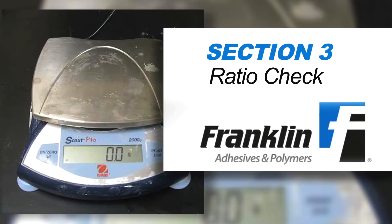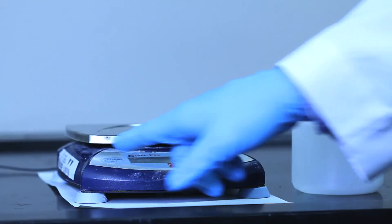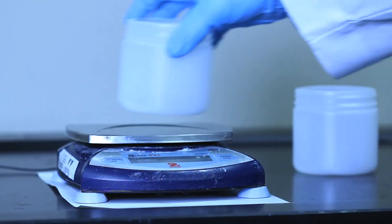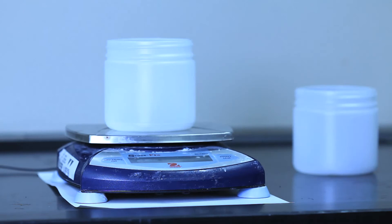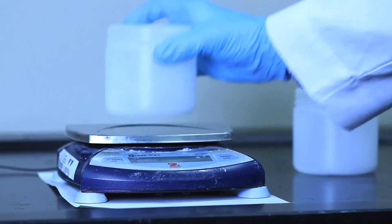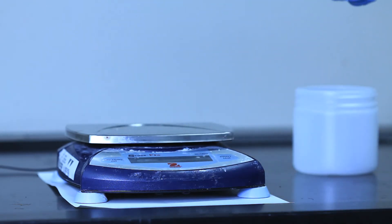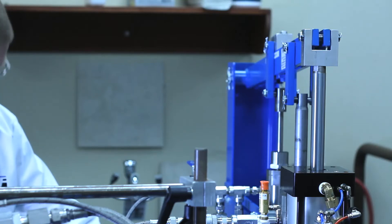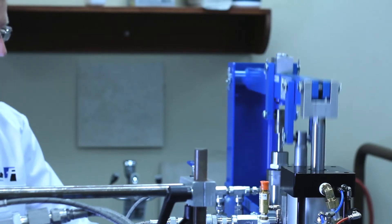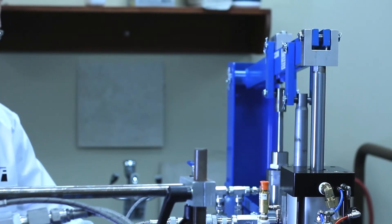Section 3. Ratio Check. The mixer should be set to the correct ratio upon receipt. Please confirm the ratio has been set correctly. See page 21 in manual for the ratio settings. Both pumps should be primed from the previous sequence, but if not, please refer back to Section 2.